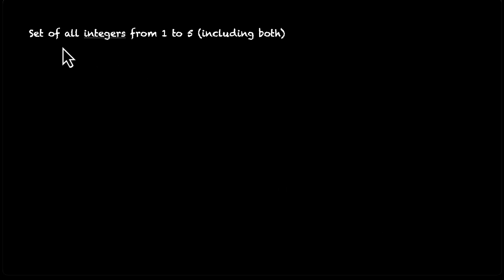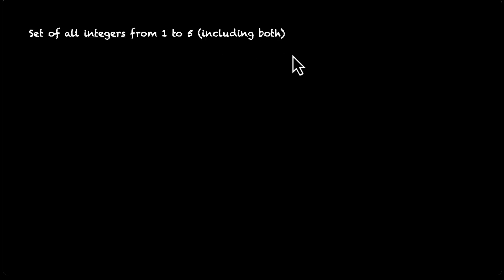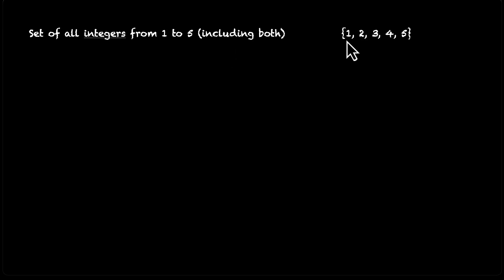Here's a problem. How do you represent the set of all integers from 1 to 5 including both? Let's try doing this in the roster form. We use curly brackets and then we put in the answer: 1, 2, 3, 4, and 5, because we're including both 1 and 5. They're all separated by commas.